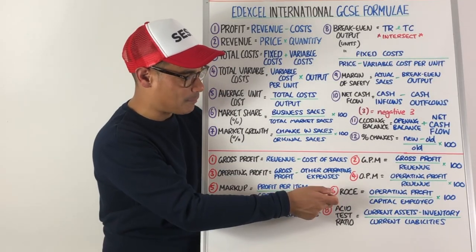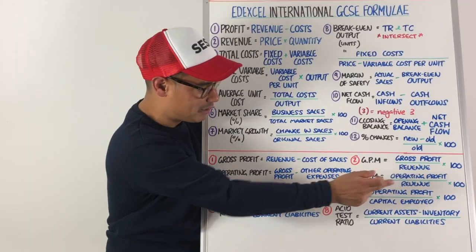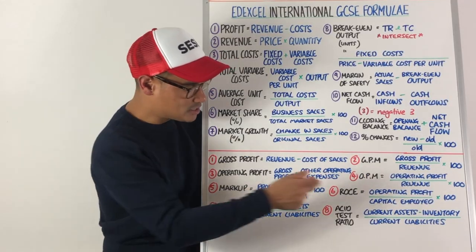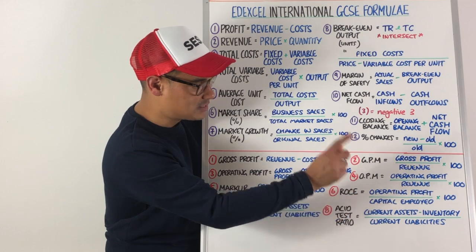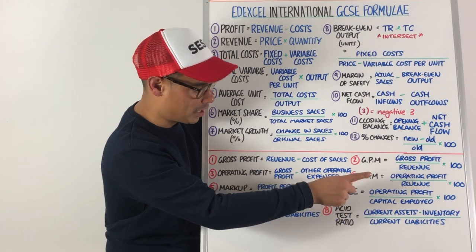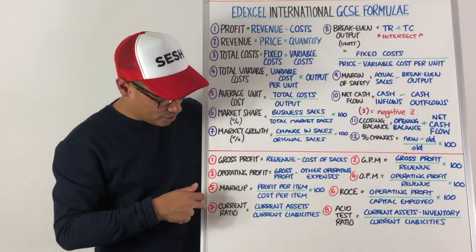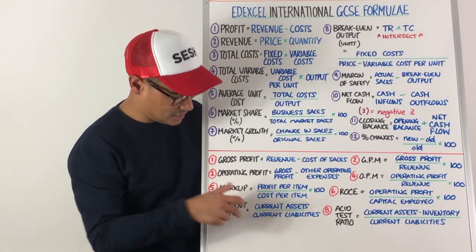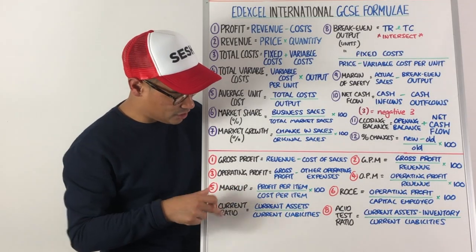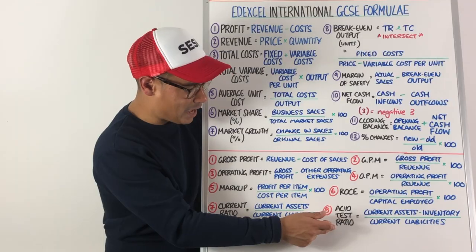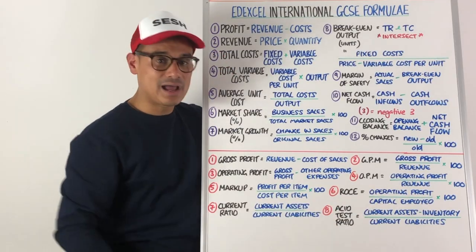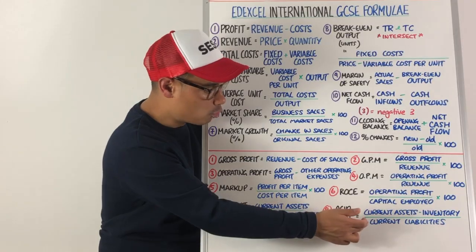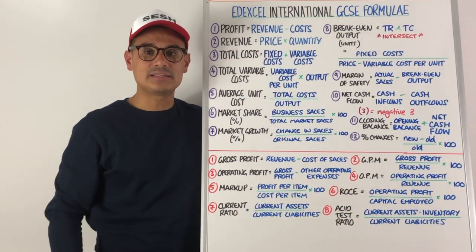Number six is return on capital employed: operating profit divided by capital employed times by 100. Number seven is your current ratio: current assets divided by current liabilities, expressed as a ratio. Number eight is your acid test ratio: current assets minus inventory (also called stock), all divided by your current liabilities.